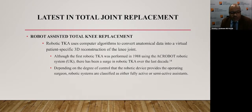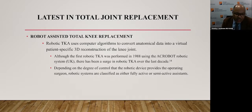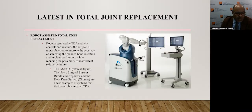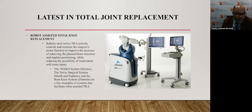We'll start with robot-assisted total knee replacement. The program uses computer algorithms to convert anatomical data into virtual patient-specific 3D reconstruction of the knee joint. Although the first robotic total knee arthroplasty was performed in 1988 using the AcroBac robotic system, there's been a surge over the last decade. Depending on the degree of control the robotic device provides, systems are classified as either fully active or semi-active assistants. The semi-active assistants are most widely used. The semi-active TKA actively controls and restrains the surgeon's motor functions to improve accuracy of bone resection and implant position, while reducing inadvertent soft tissue injury. Several systems exist, including the MAKO system by Stryker, the NAVIO system, and the ROSA knee system with Zimmer.